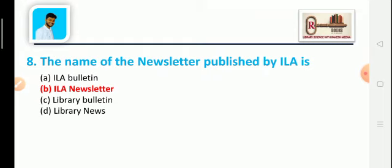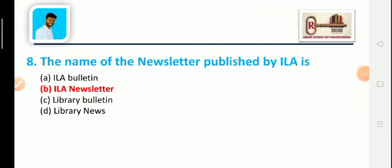Question 8: What is the name of the newsletter published by ILA? Option A: ILA Bulletin, Option B: ILA Newsletter, Option C: ILA Library Bulletin, Option D: Library News. The correct answer is Option B: ILA Newsletter.